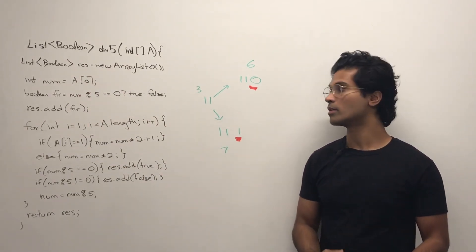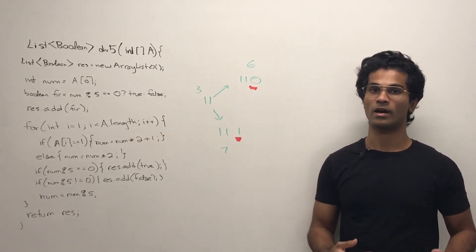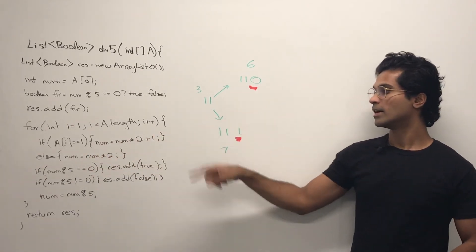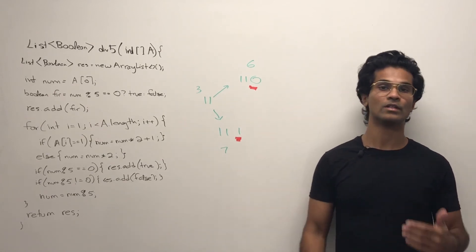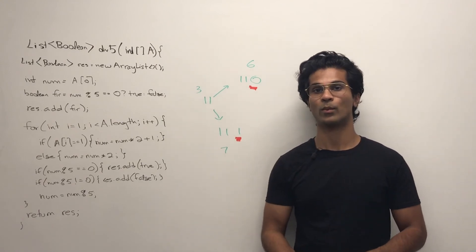So what we're going to do is initialize our boolean result and first take the number that's in a of 0. If that number is divisible by 5, we're going to add true, otherwise we add false. Then we begin iterating and we do this check and every time we build it, we are going to see if it's divisible by 5 or not. If it is, we add true to our result, otherwise we add false.